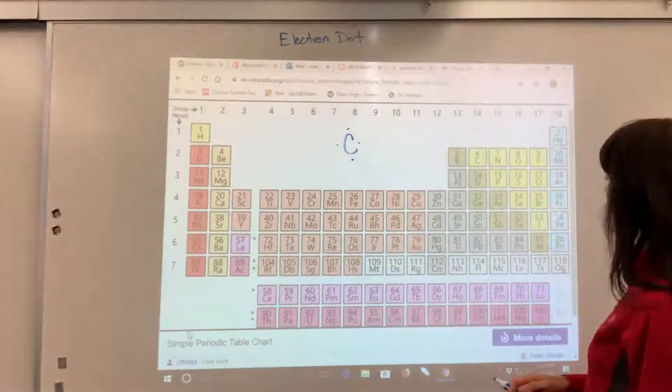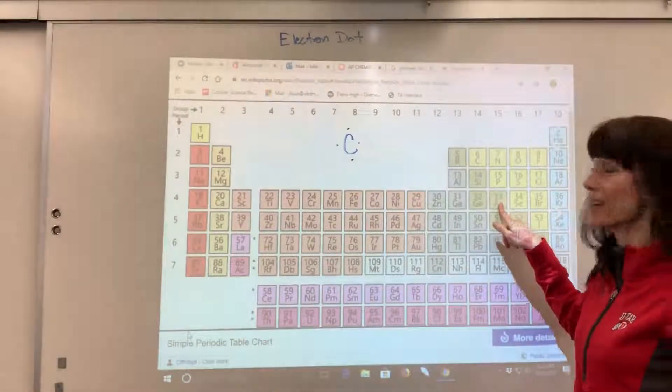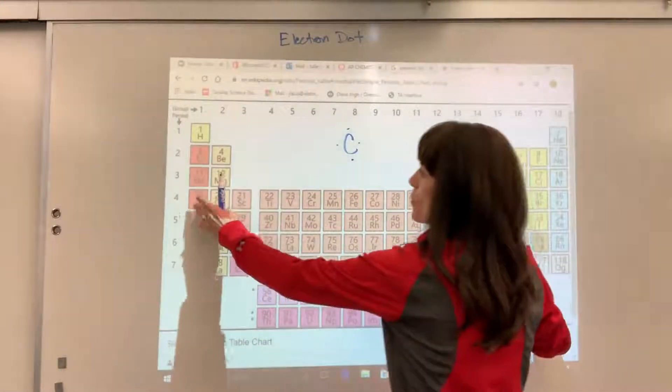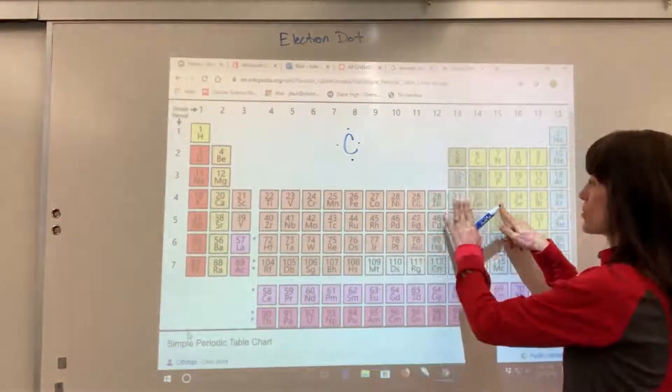Let's do another one. Let's take an arsenic right here. So we can count the valence electrons. One, two, skip the D, three, four, five.